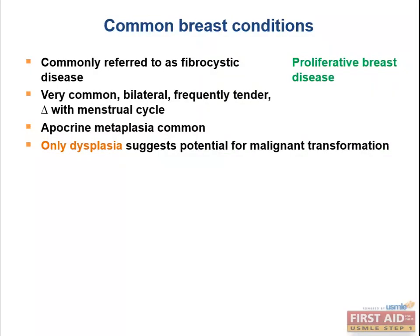In contrast, fibrocystic disease tends to be bilateral and tender, fluctuating with the menstrual cycle. A woman will start feeling masses or cord-like sensations in her breast — frequently bilateral. She'll say it's painful, and we like pain in breast pathology because painless is cancer. It's estrogen sensitive and tends to regress when she's menstruating.